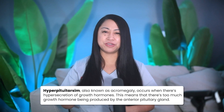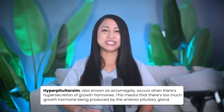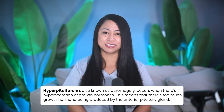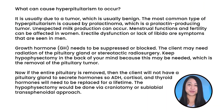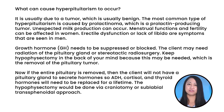Hyperpituitarism, also known as acromegaly, occurs when there is hypersecretion of growth hormone — meaning there's too much growth hormone being produced by the anterior pituitary gland. What can cause hyperpituitarism? It is usually due to a tumor, which is usually benign. The most common type of hyperpituitarism is caused by prolactinoma, which is a prolactin-producing tumor. Unexpected milk production can occur. Menstrual function and fertility can be affected in women. Erectile dysfunction or lack of libido are symptoms seen in men.